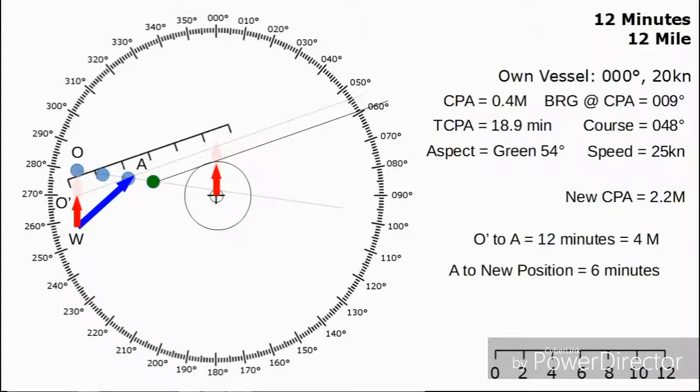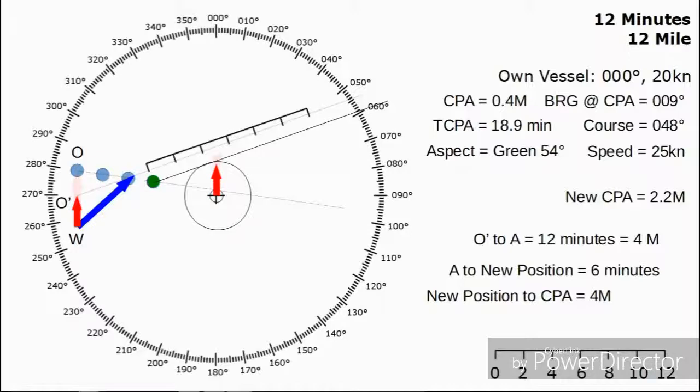We also know from A to the new position has taken six minutes, so we've got the length of that leg. Then we want to measure the distance from that new position to the CPA, which actually comes out at 4 miles again, which we've already said is 12 minutes. If that wasn't exactly 4 miles, we'd just do a little bit of algebra and work out exactly how long that would take.